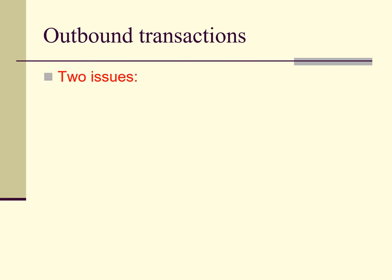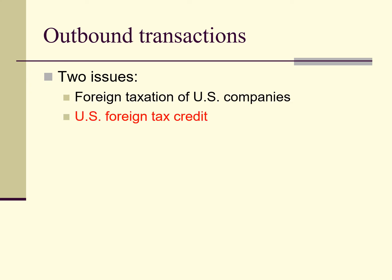Our next area of study in Unit 10 is outbound transactions. In our study, we are concerned primarily with two issues: the first is whether a U.S. company will be taxed in a foreign country on sales to customers in that country, and the second is whether the United States will allow a U.S. foreign tax credit against any tax paid in that foreign country.